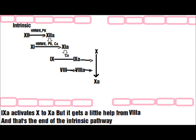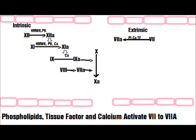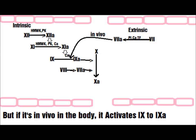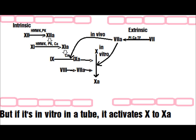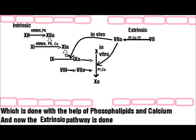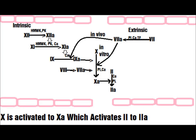But it gets some help from Factor 8A — and that's the end of the intrinsic pathway. The extrinsic pathway: phospholipids, tissue factor, and calcium activate Factor 7 to 7A, which if in vivo activates Factor 9 to 9A, and if in vitro activates Factor 10 to 10A, with the help of phospholipids and calcium. And now the extrinsic pathway is done.